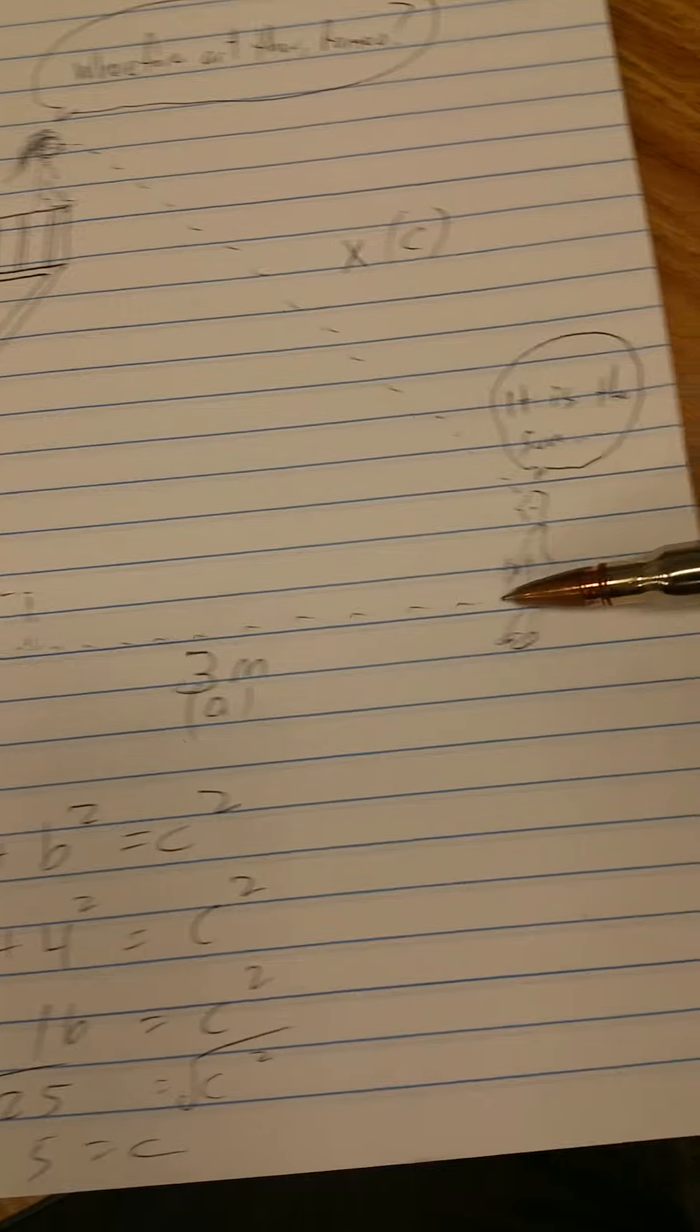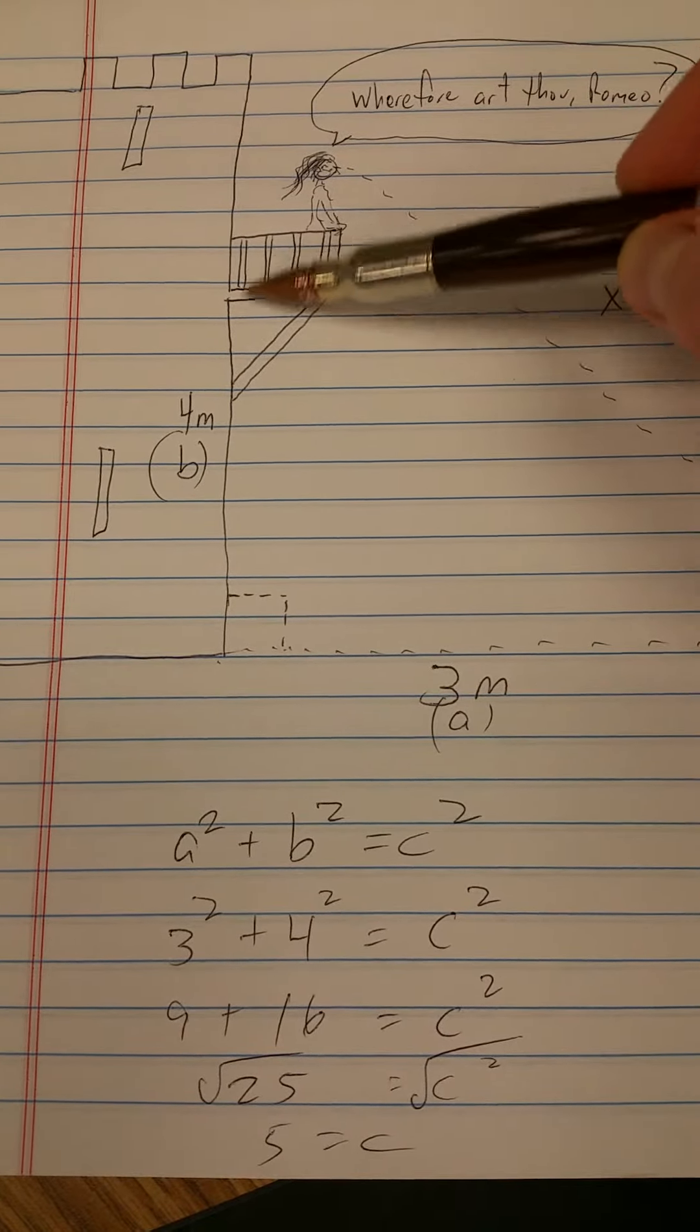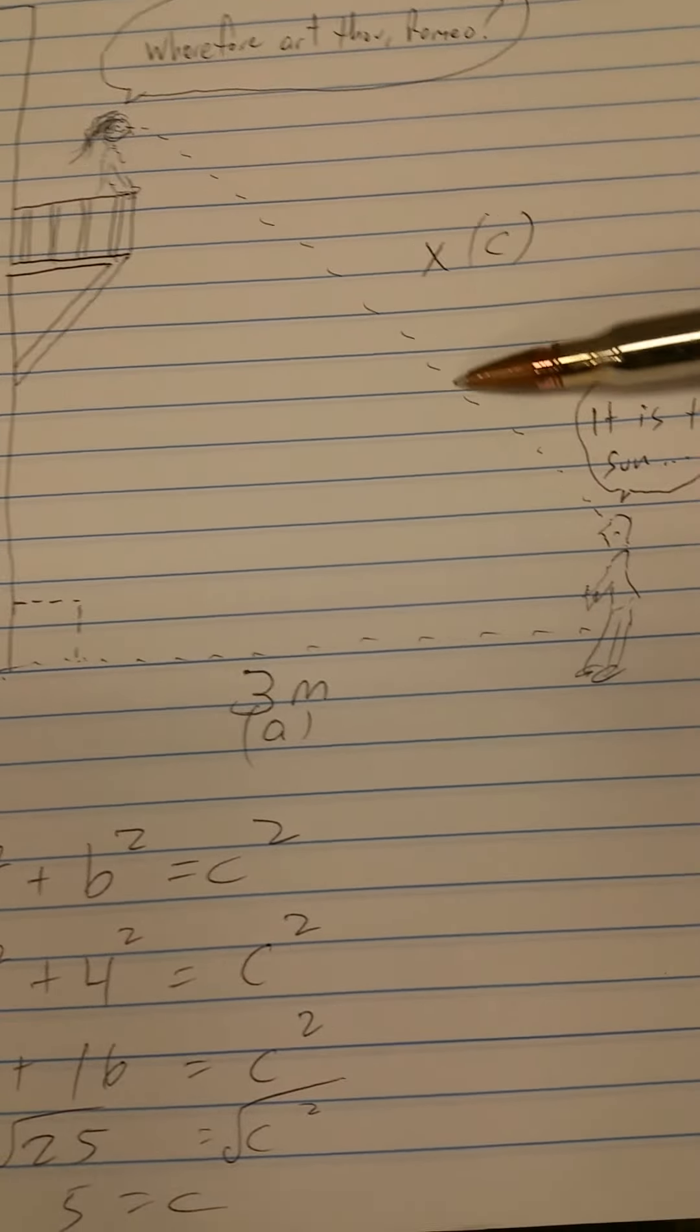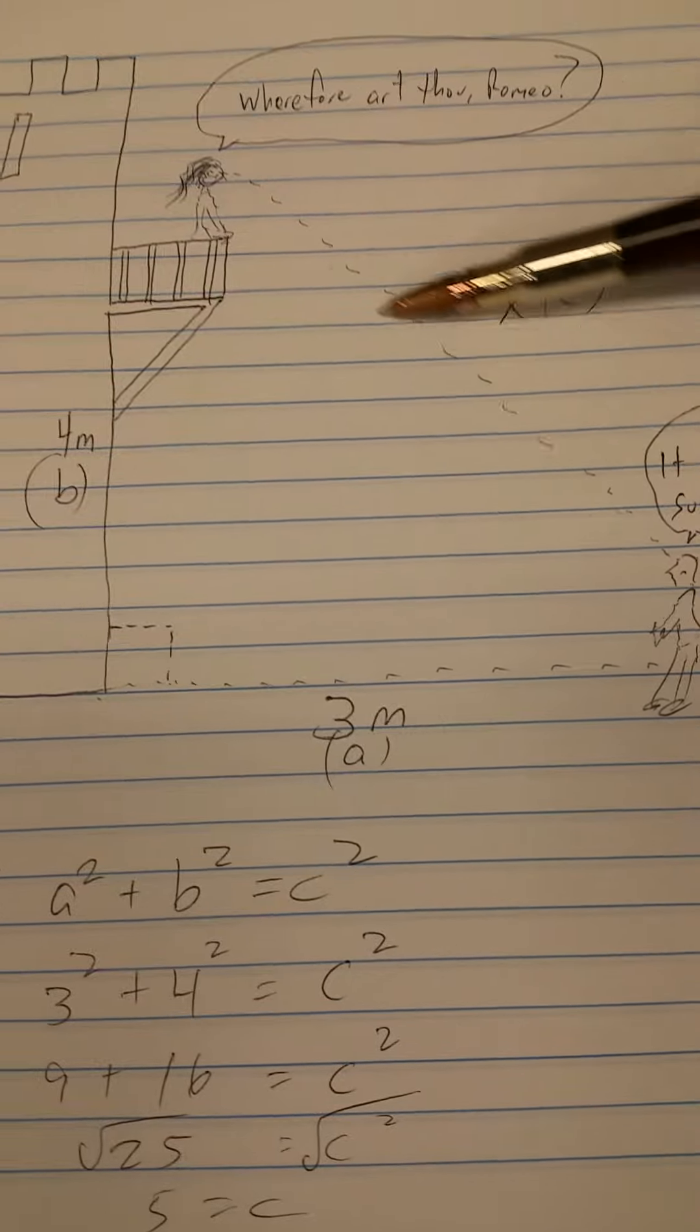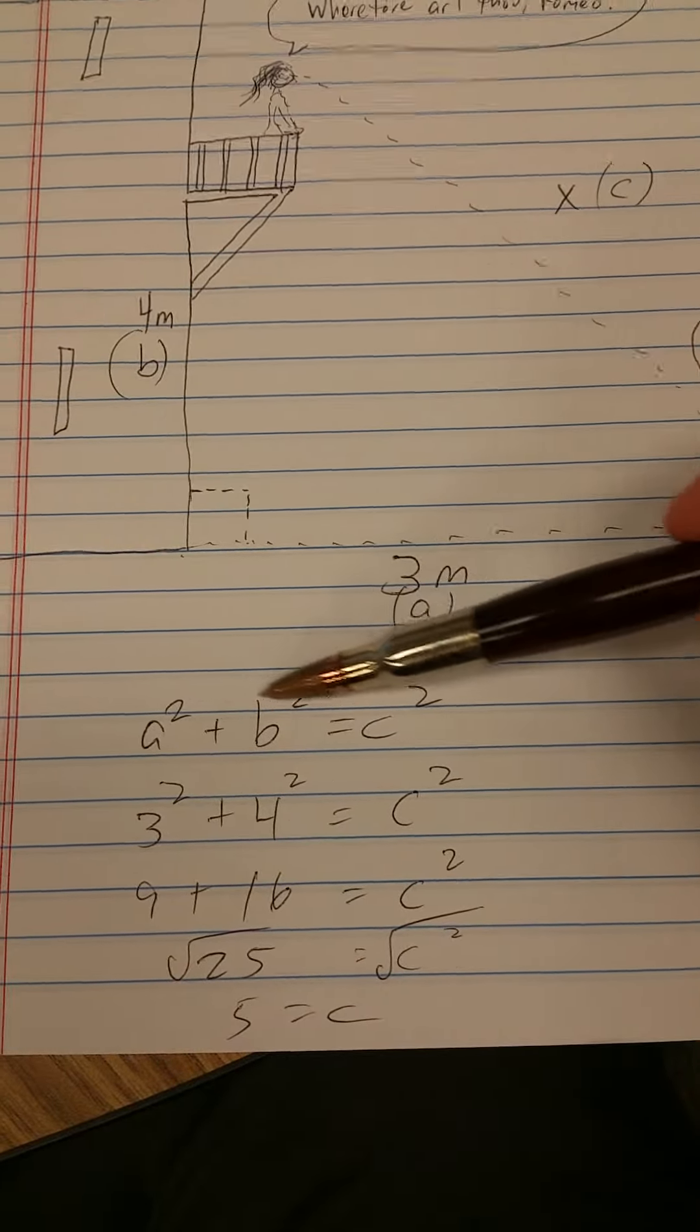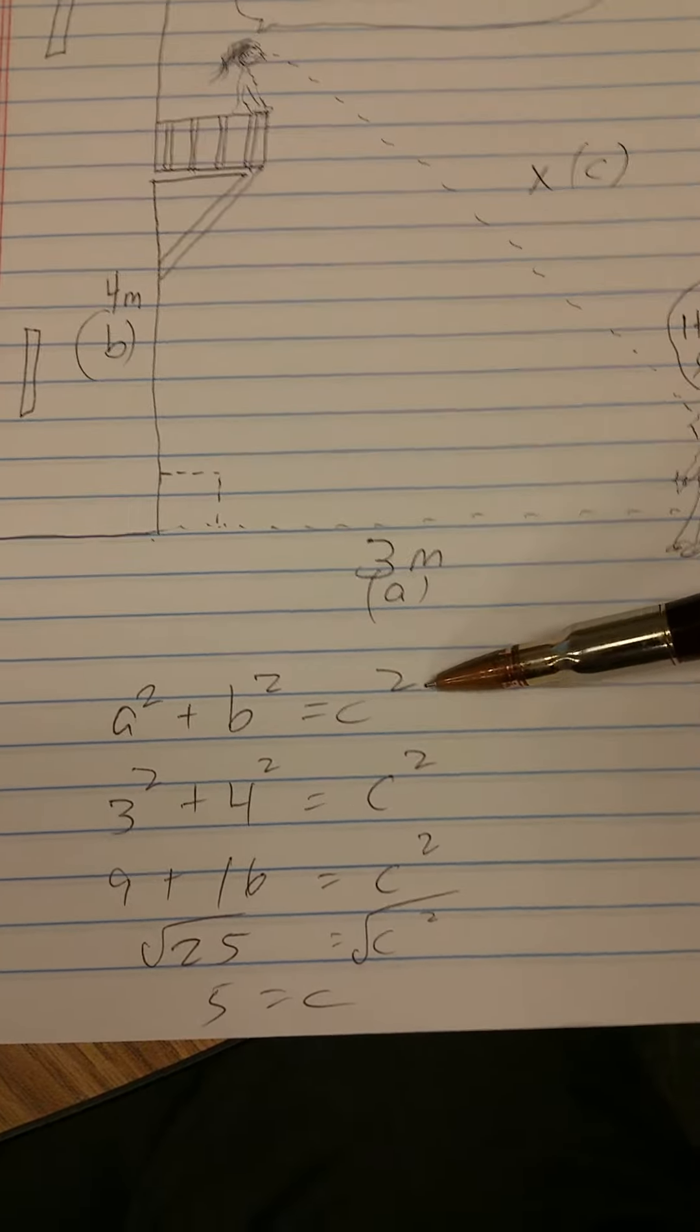If it's three meters from Romeo to the castle and the height of the balcony is four meters, then you can determine the hypotenuse of the angle between Romeo and Juliet in much the same way that you can determine C squared using the Pythagorean theorem.